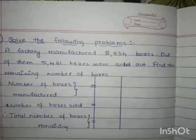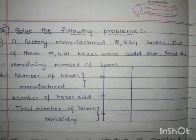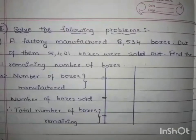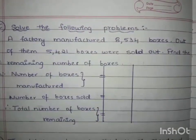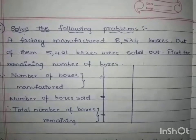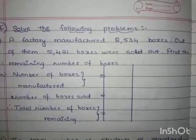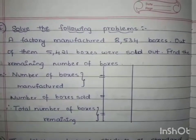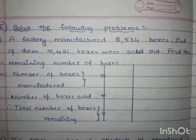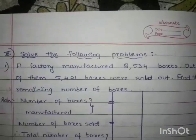The first question given is: A factory manufactured 8,534 boxes. Out of them, 5,421 boxes were sold out. Find the remaining number of boxes. The question asked here is to find the remaining number of boxes. When the term 'remaining' comes, you should remember that we have to subtract the given numbers. So let us first write down the statements.